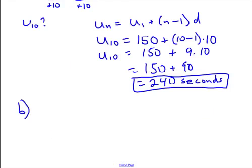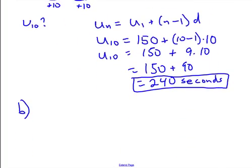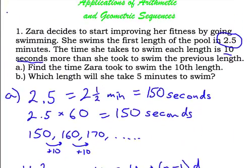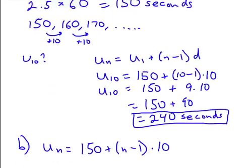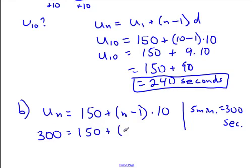Part B says: which length will she take 5 minutes to swim? We set up the equation u_n equals 150 plus (n minus 1) times 10. Now 5 minutes is 300 seconds, so we set u_n equal to 300 and solve for n — that will find which length gives a time of 300 seconds.